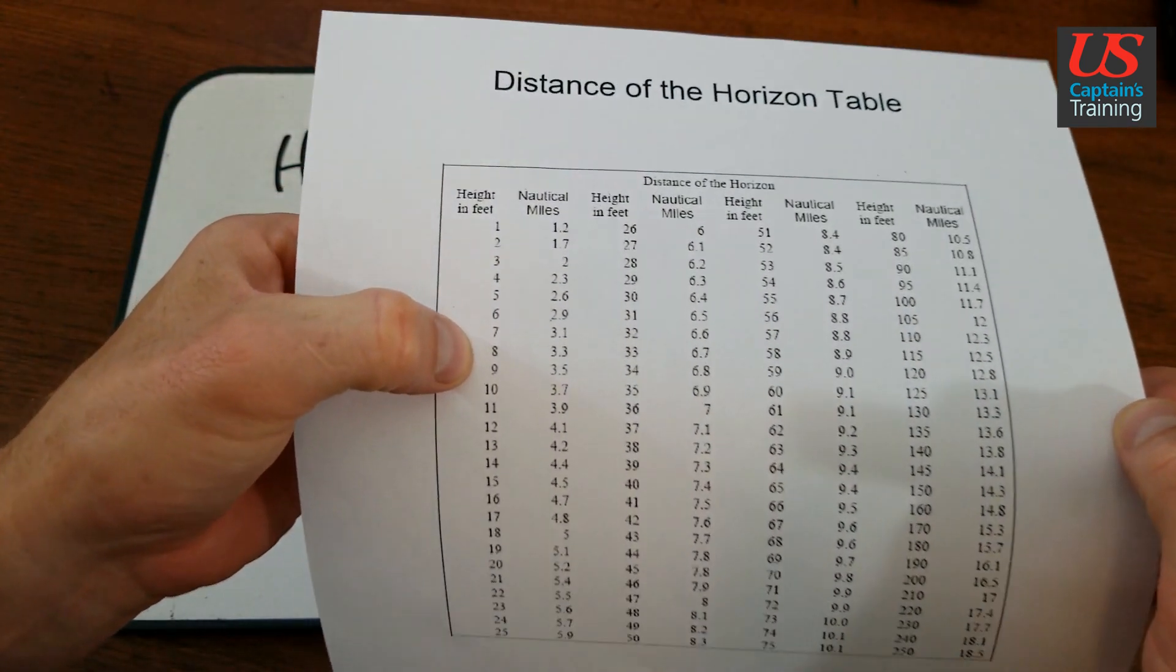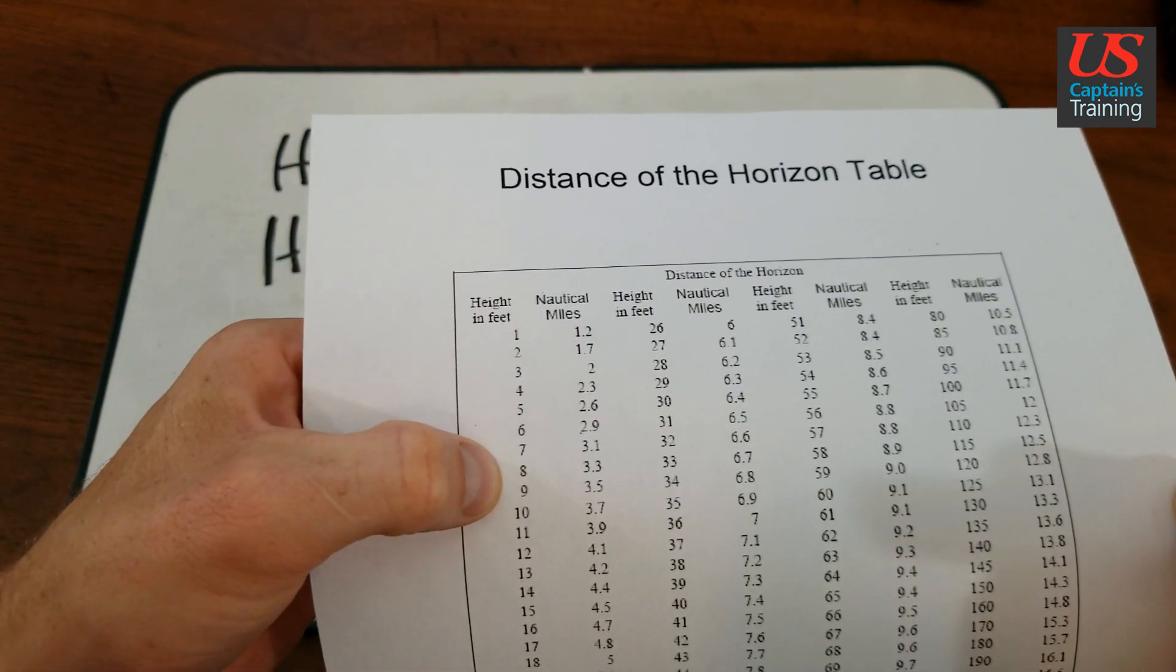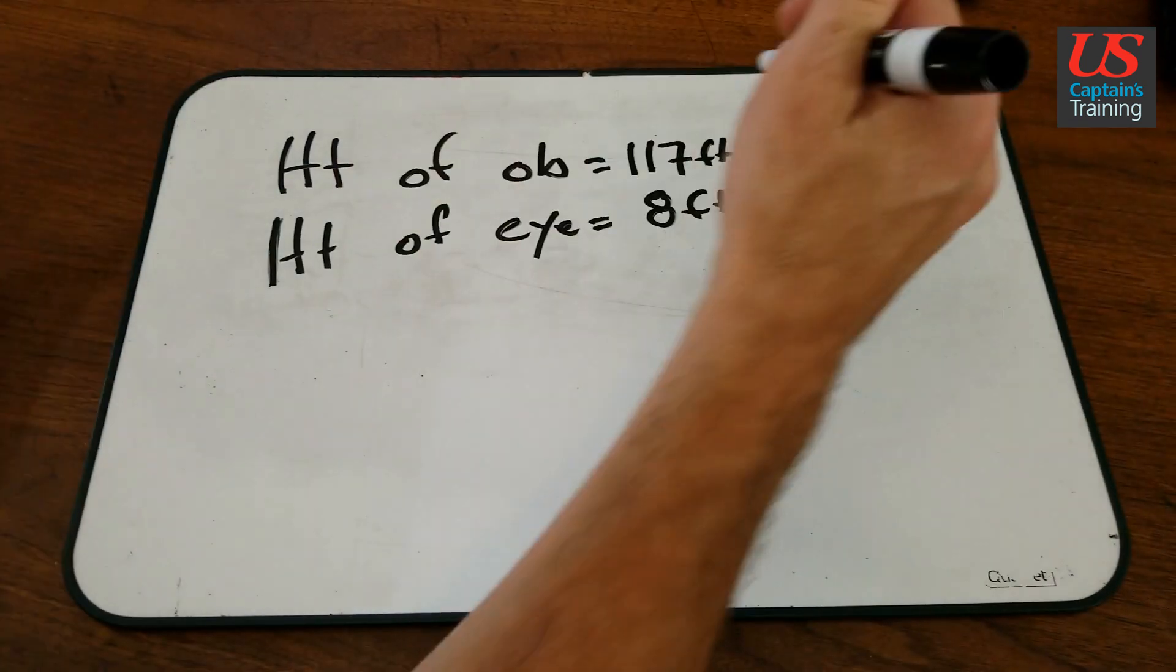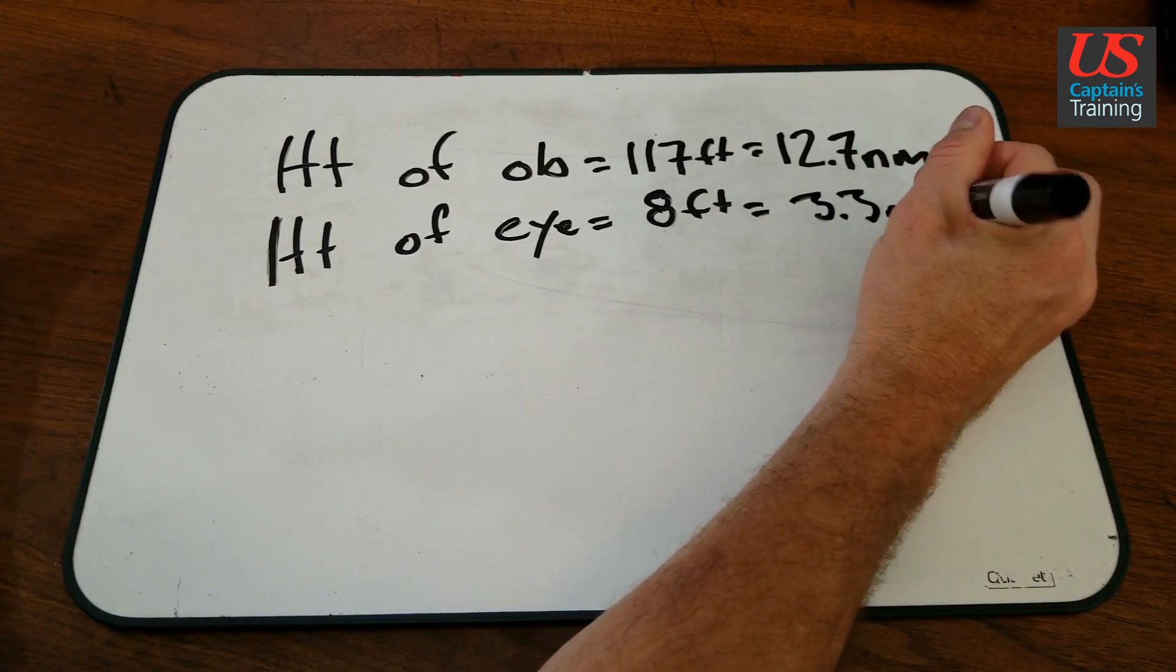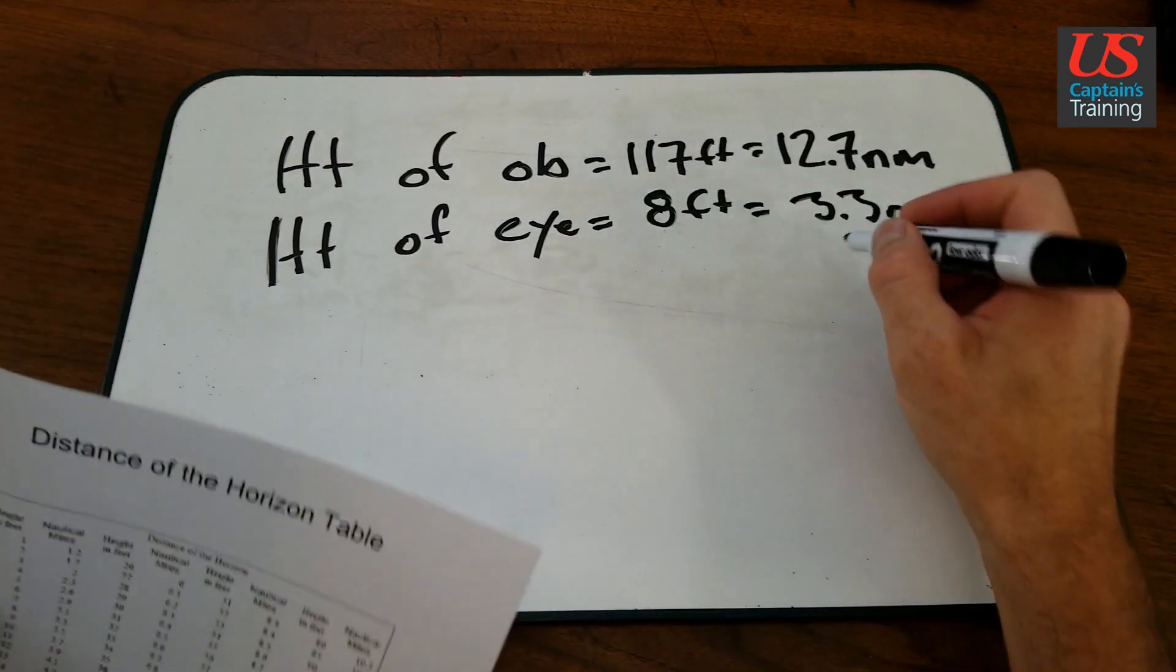And now let's look at a height of 8 feet. Right here we have 3.3 nautical miles. If we add these together...